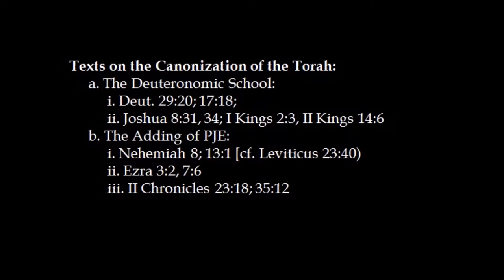In 2 Kings 14, verse 6, talking about King Joash of Judah: 'He did not put to death the children of the assassins, in accordance with what is written in the book of the teachings of Moses, where the Lord commanded: parents shall not be put to death for children, or children to death for parents. A person shall be put to death only for his own crime.' He is in effect quoting Deuteronomy chapter 24, verse 16. We'll later show the proof found in the book of Kings of how Deuteronomy was actually found, or promulgated.